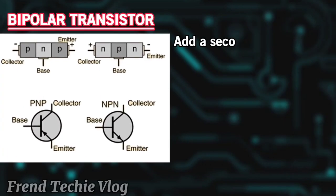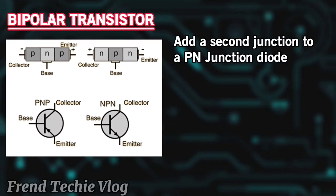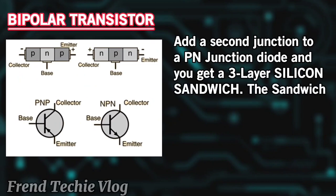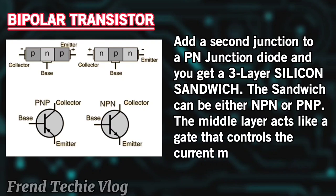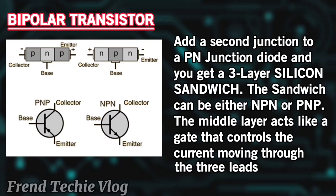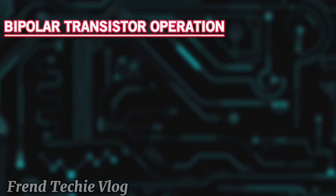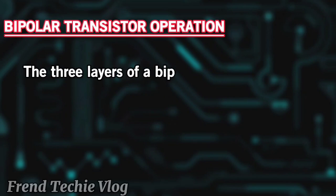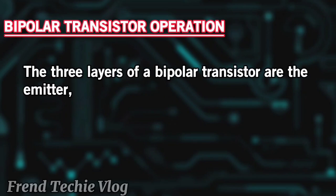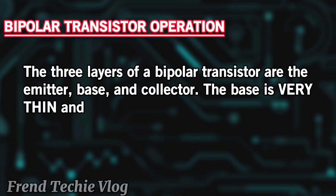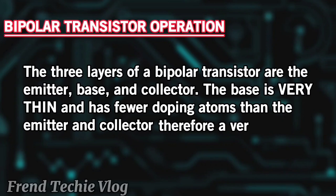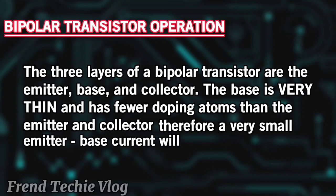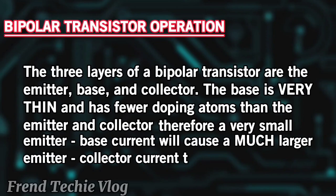Adding a second junction to a PN junction diode gives you a three-layer silicon sandwich. The sandwich can be either NPN or PNP. The middle layer acts like a gate that controls the current moving through the three leads. The three layers of a bipolar transistor are the emitter, base, and collector. The base is very thin and has fewer doping atoms than the emitter and collector; therefore, a very small emitter-base current will cause a much larger emitter-collector current to flow.